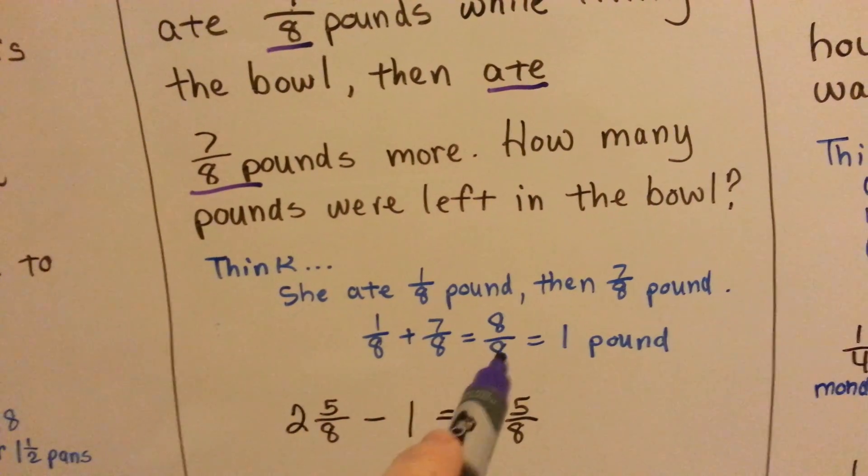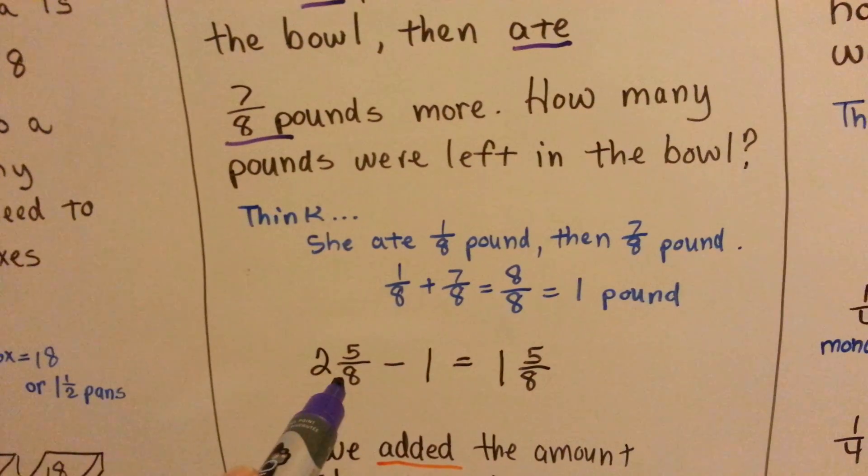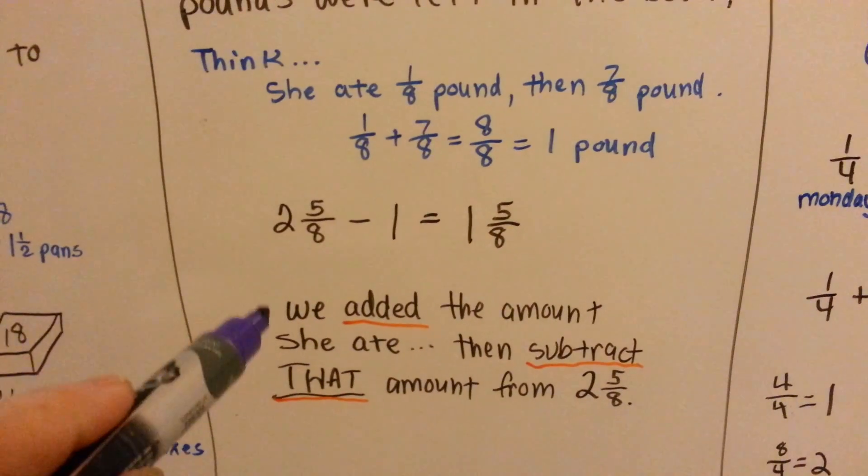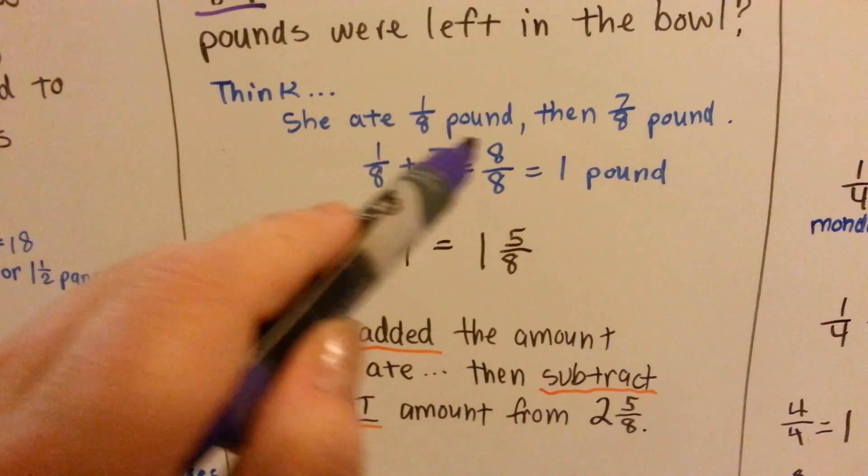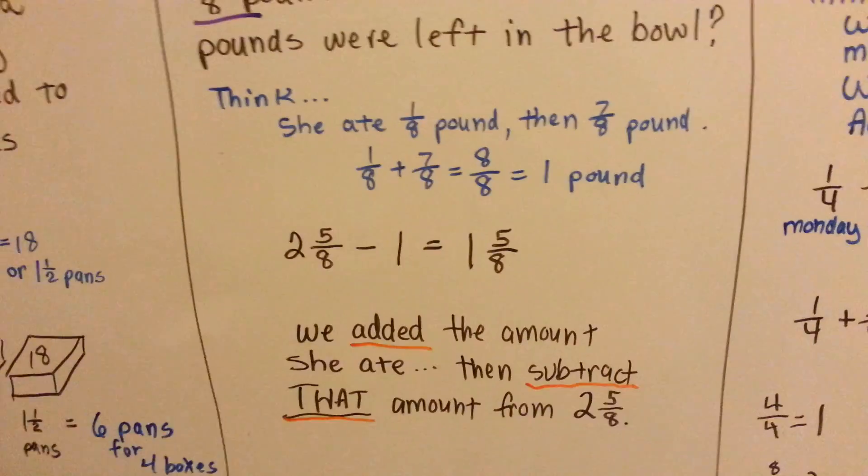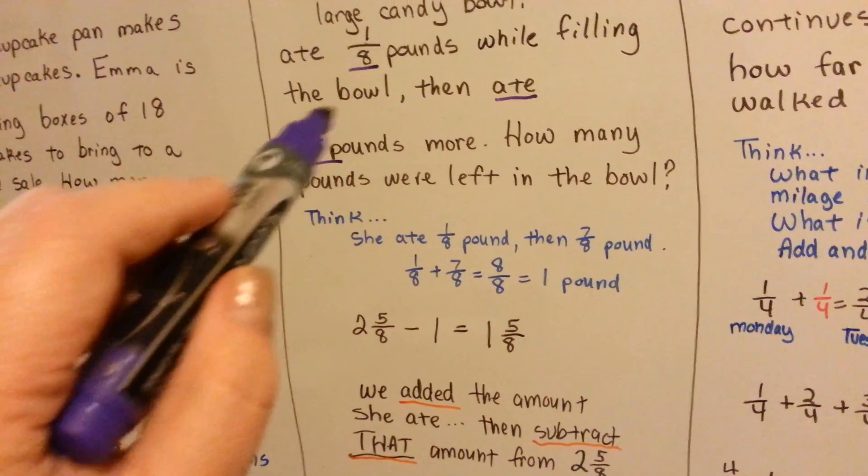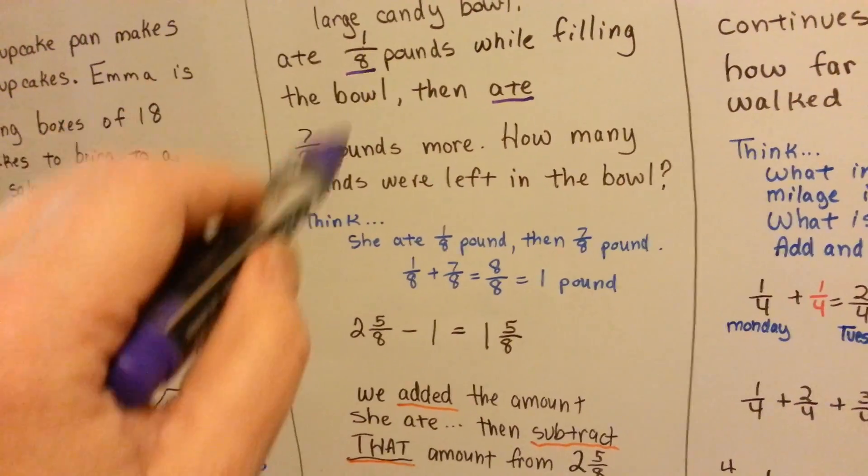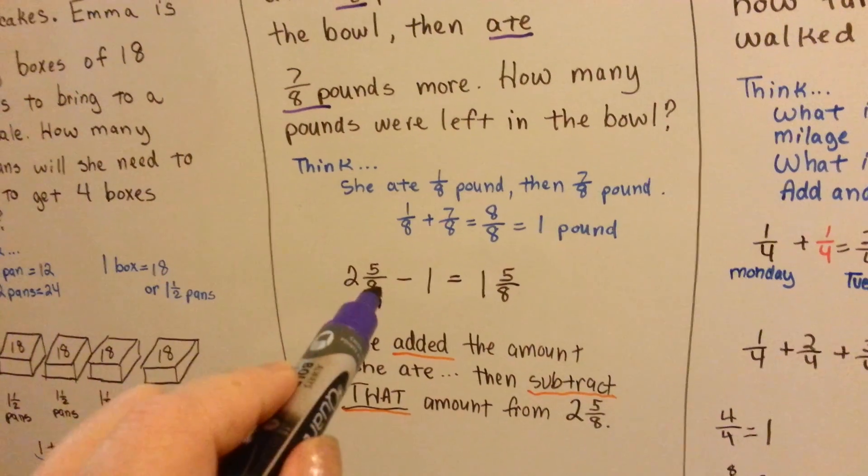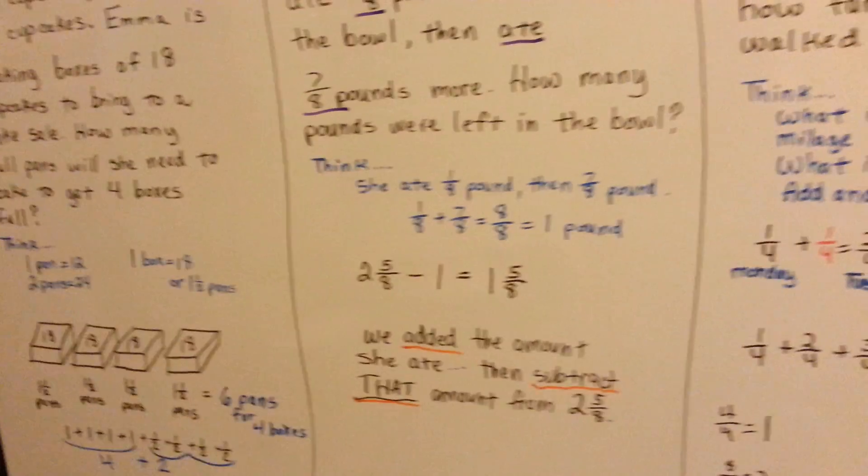Remember, when the numerator and denominator are the same, it equals 1. All we have to do is take that 1 away from the 2 and 5 eighths. We could do that mental math, and we have 1 and 5 eighths. We added the amount that she ate and then subtracted that from the original number of 2 and 5 eighths. So now we know that we could use subtraction to condense information before we subtract it. We added them before we subtracted.